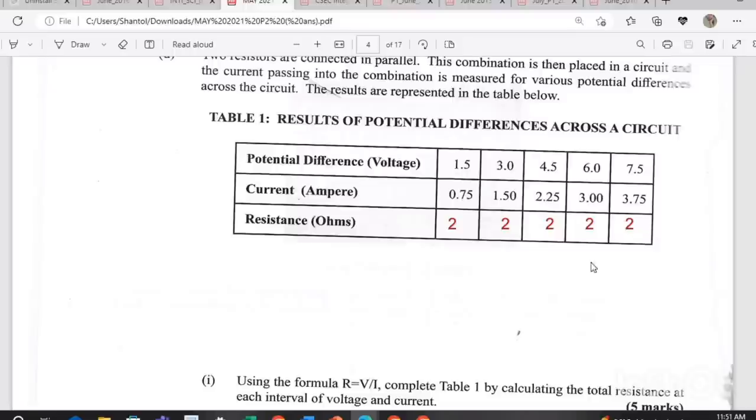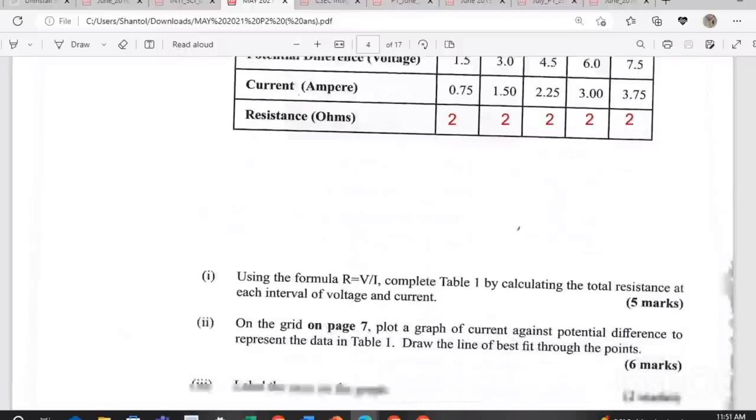That is for five marks. If you are given a formula, just plug your information and it should give you the answers you're looking for. Make sure you know what the letters in formula represents. The R is for resistance, the V for voltage, and the I for current.